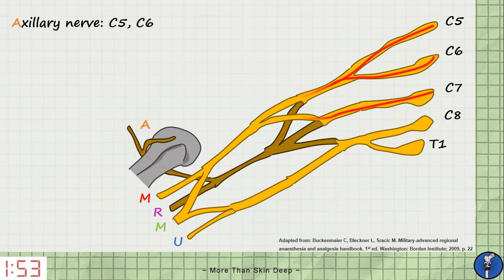Next the musculocutaneous nerve receives contributions from the upper three roots, C5, C6 and C7.